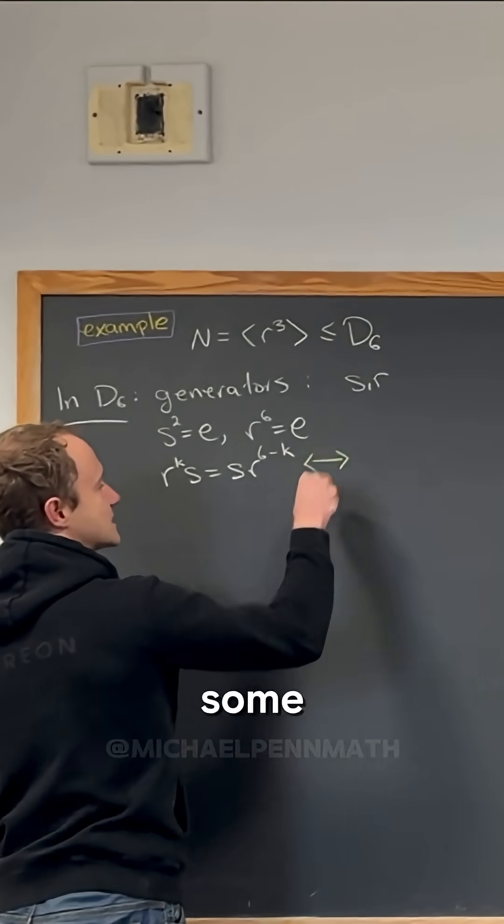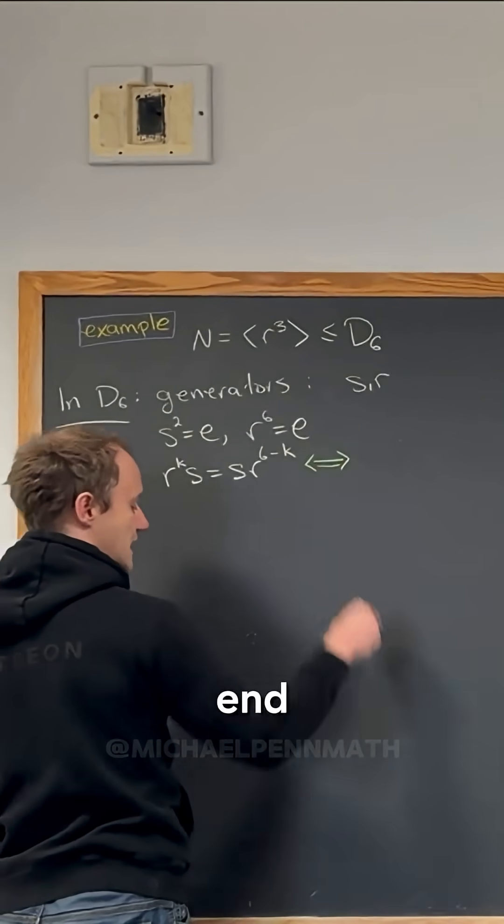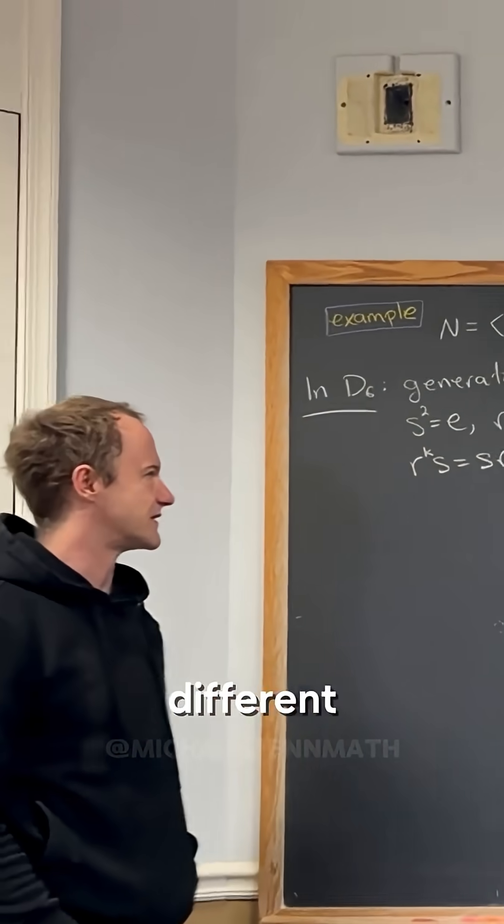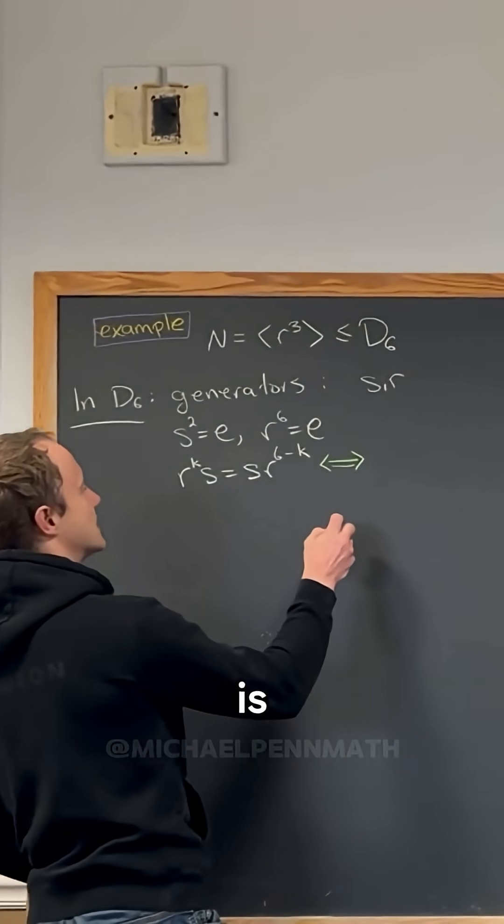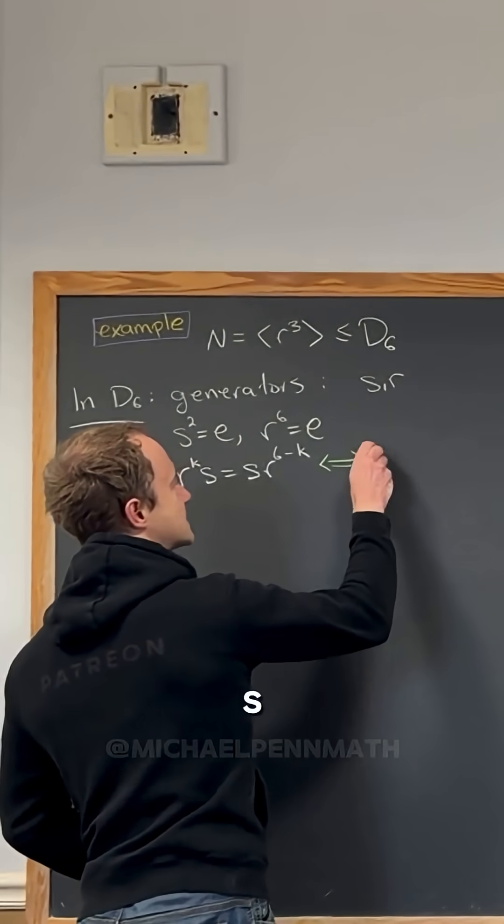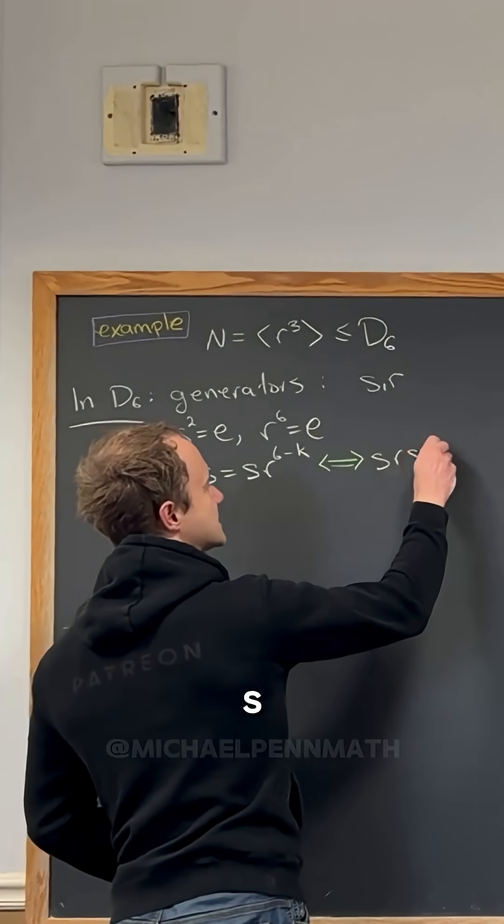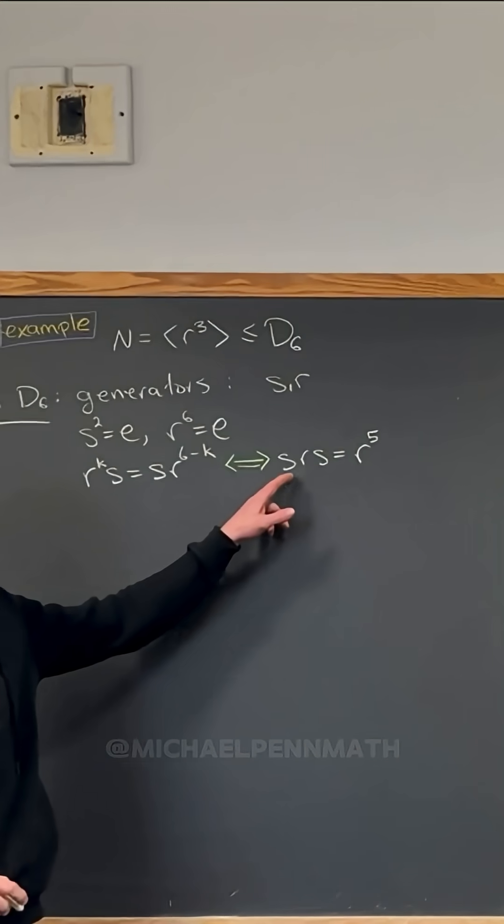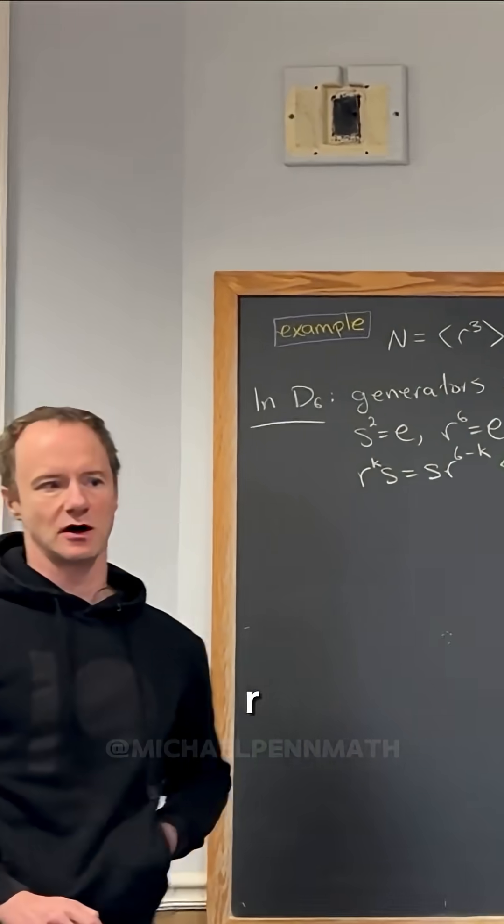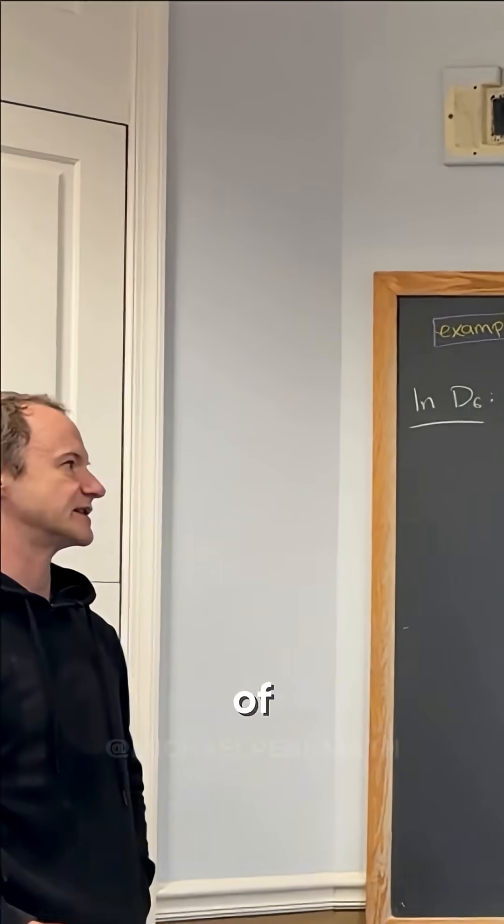If you search the internet about some things, you may end up seeing a slightly different version of this. Sometimes this rule is given by s r s equals r to the fifth, and generally s r to the k s would be r to the sixth minus k. It's kind of the same thing.